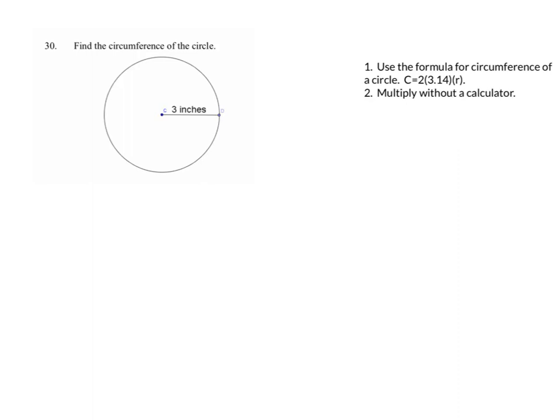So we have r is equal to 3. If we plug in, we get C equals 2 times 3.14 times 3. I'm going to multiply my whole numbers together first. 2 times 3 is 6.